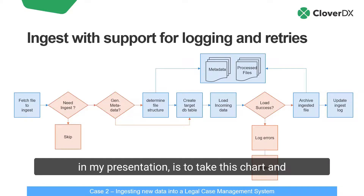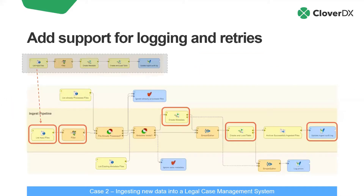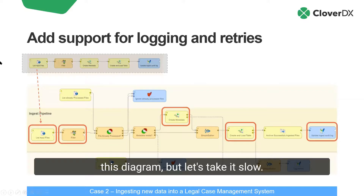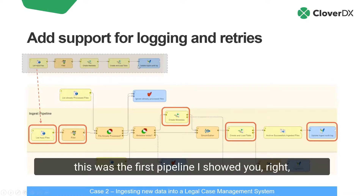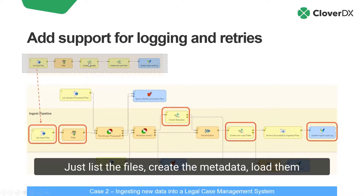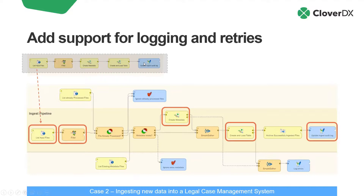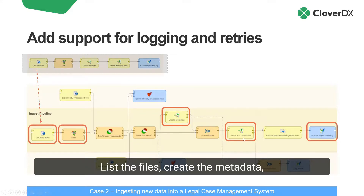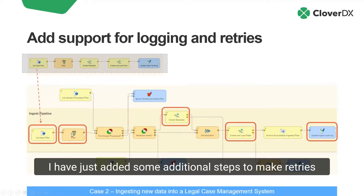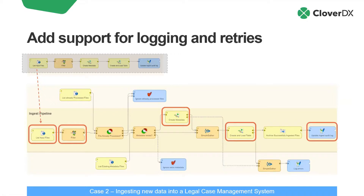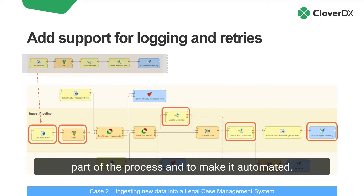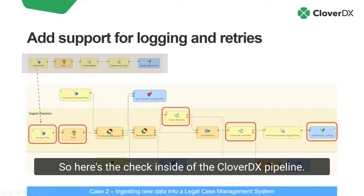The next step, as you might imagine by this point, is to take this chart and turn it into a CloverDX ingest pipeline. There's a lot going on in this diagram, but let's take it slow. Remember this one up here in gray — that was the first pipeline I showed you, the base case: just list the files, create the metadata, load them into the table, and then update a log. You can see that base pipeline is still in the final pipeline — it's the items in the red boxes: list the files, create the metadata, create and load the table, ingest. This base pipeline is still in here; I've just added additional steps to make retries part of the process and automate it.